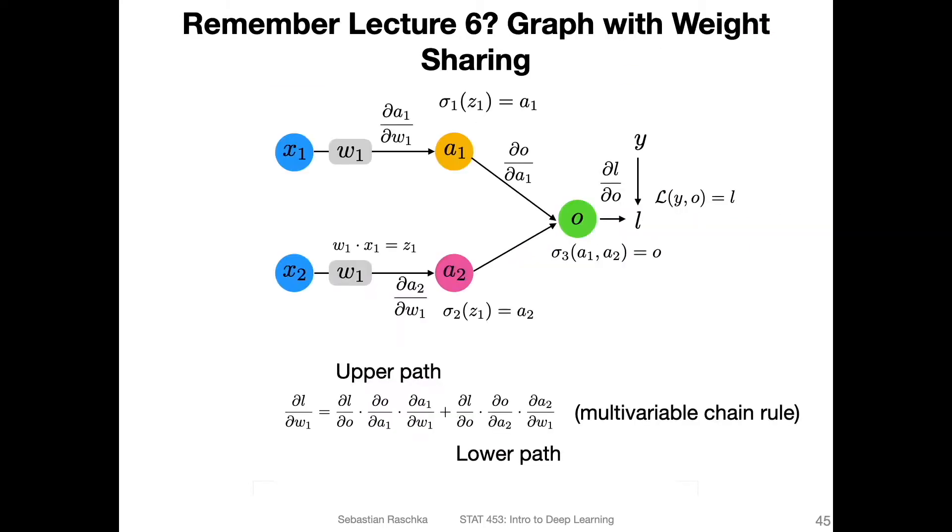I'll simplify this with a very simple sketch. For instance, imagine you have two different types of inputs. Then you compute these activations by using a weight, but here you are using the same weight, let's say it's the same w1 here.